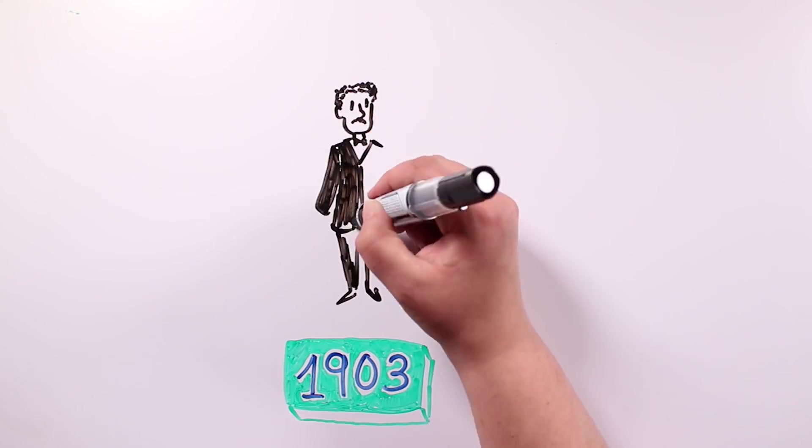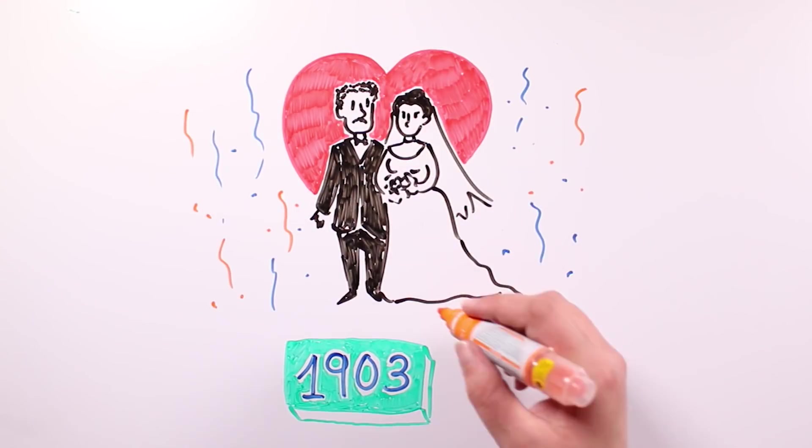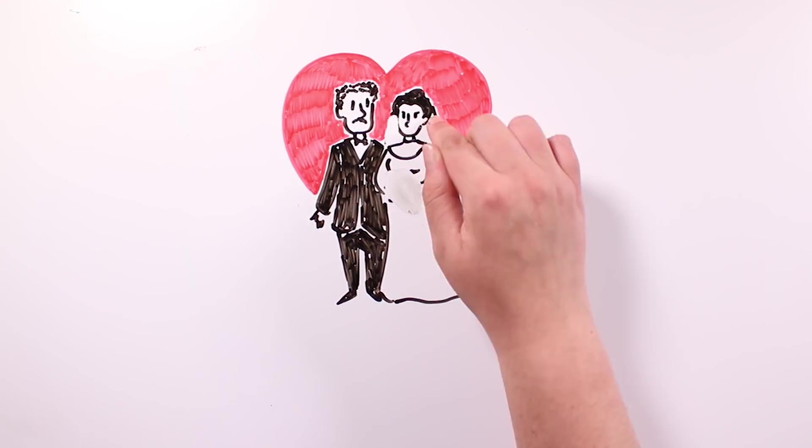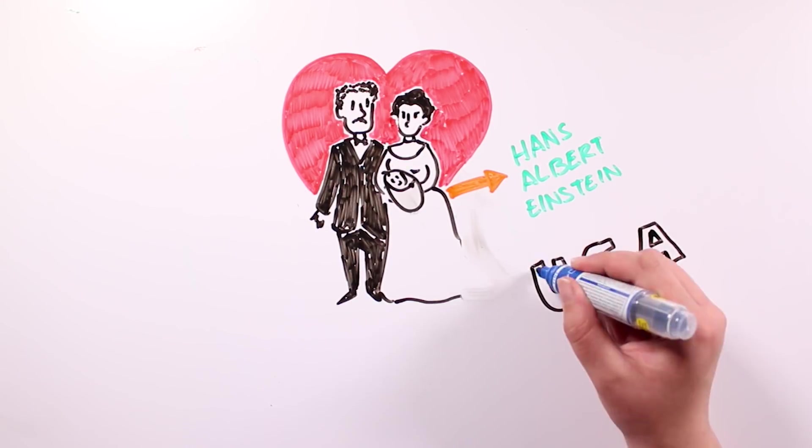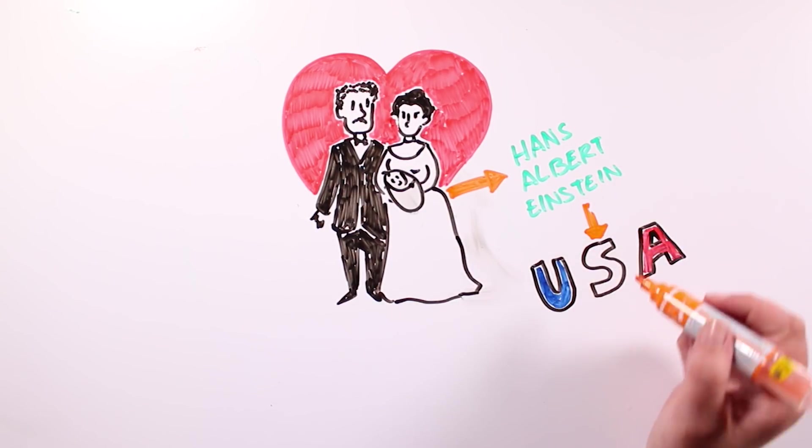In 1903, Albert and Mileva finally got married, and a year later, his son Hans Albert Einstein was born. He had moved to California to become a hydraulic engineer.